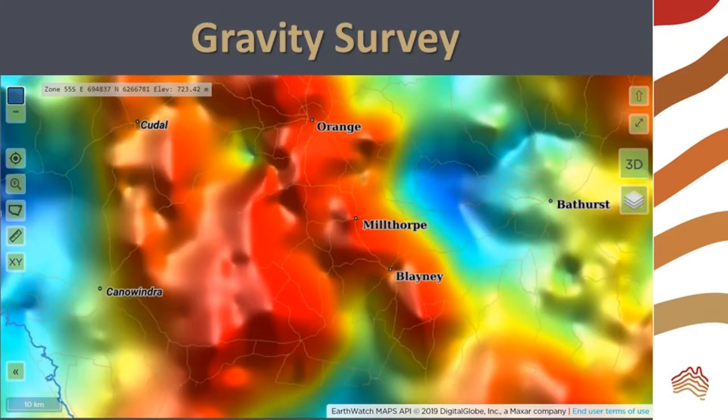A gravity survey shows areas of high gravity in red and low gravity in blue. Dense minerals like gold and iron create areas of slightly higher gravity.